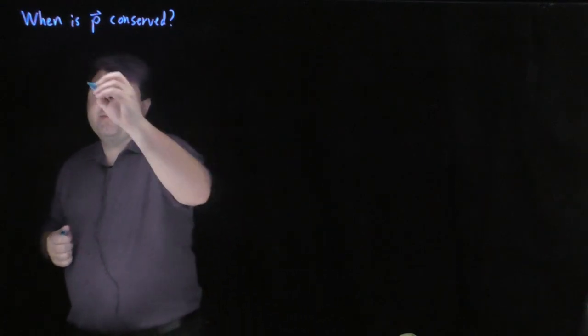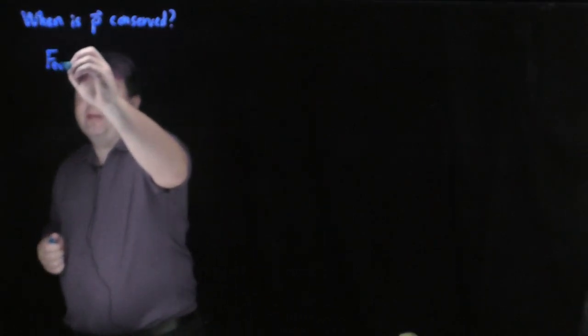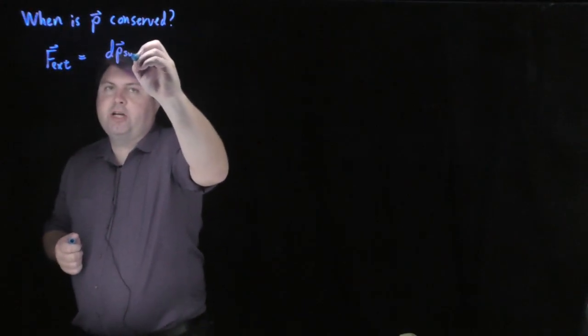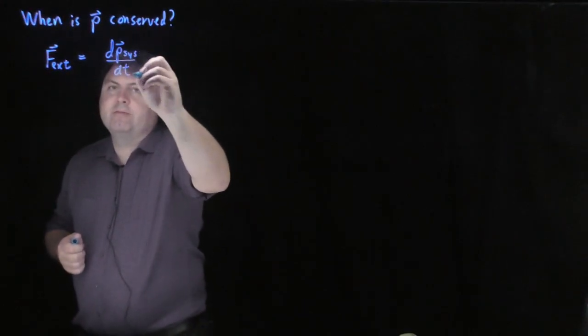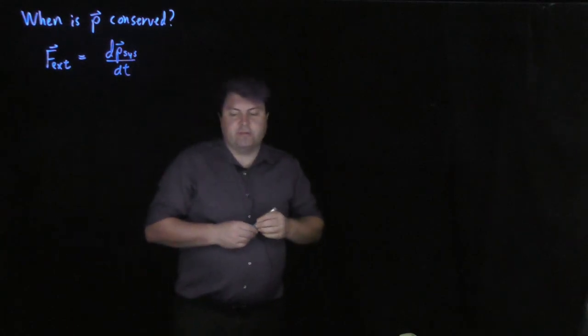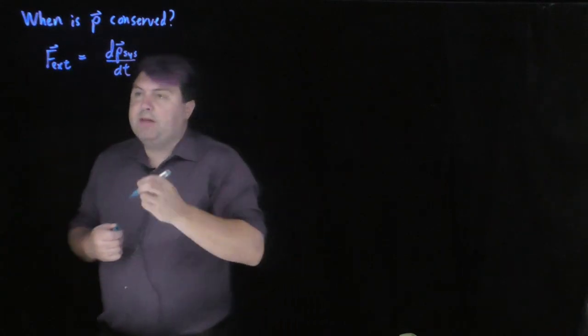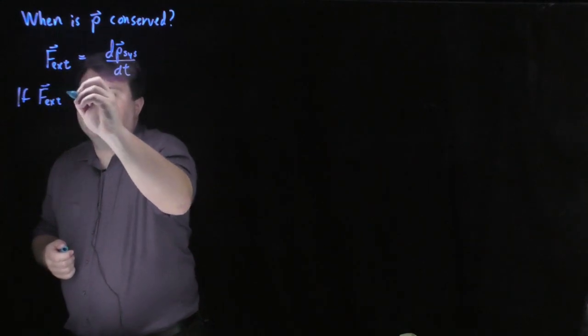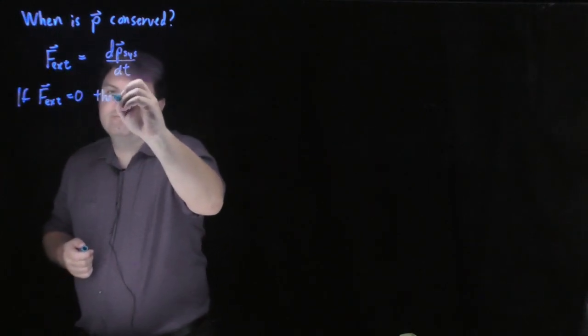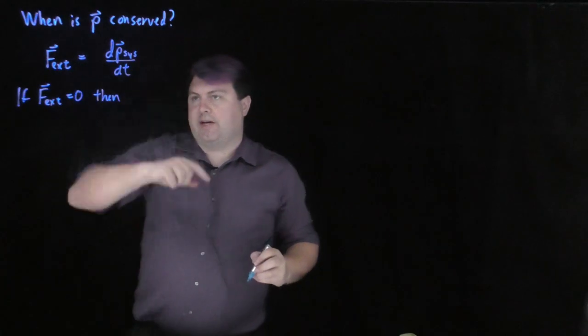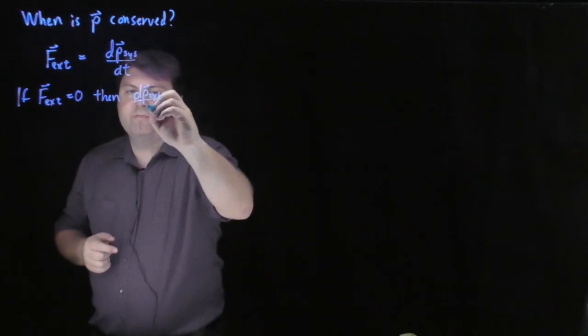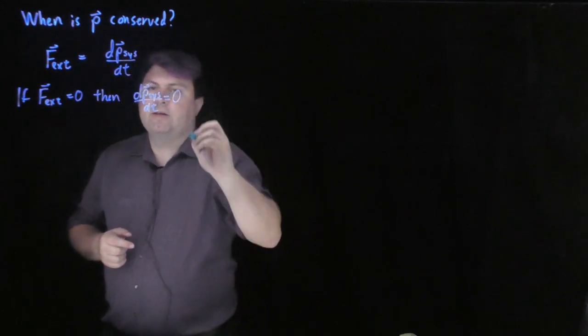So one relationship that we have is that we've learned that the external force is equal to the change of momentum in the system with respect to t, the derivative of this. What this means is that if our force external happens to be zero, then it's zero on this side. So we have the change of momentum in the system with respect to time is zero.